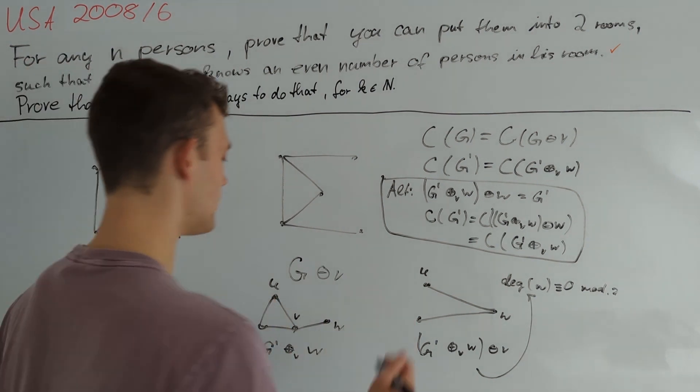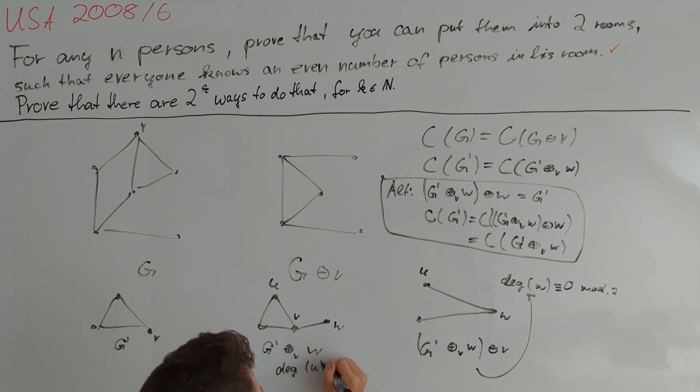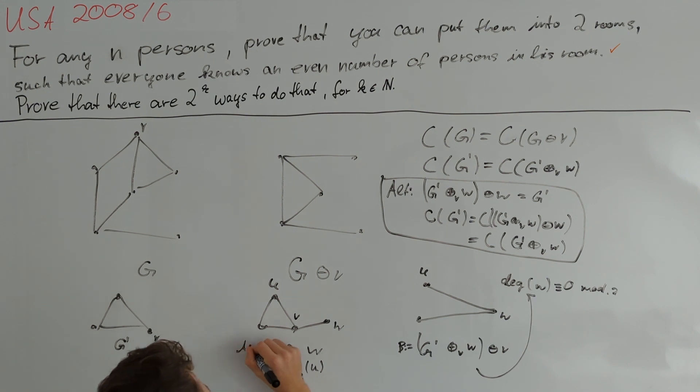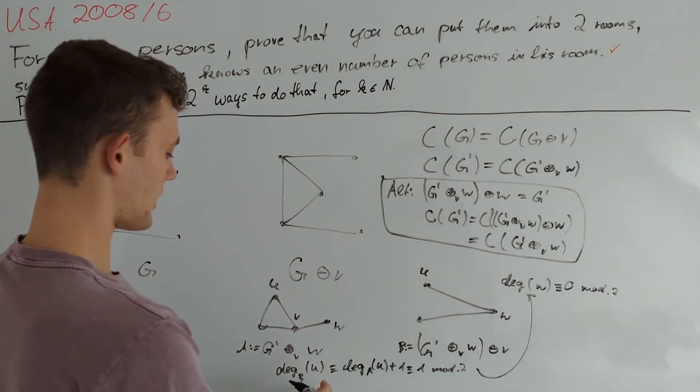So in total we get that the degree of U with respect to B where we call this graph B and that one A, well then the degree of U with respect to B must be equivalent by what I've said before of the degree of U with respect to A plus 1. And since that is an even number that is just 1 mod 2.